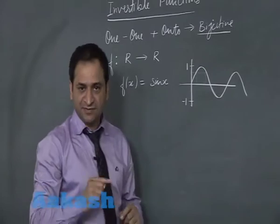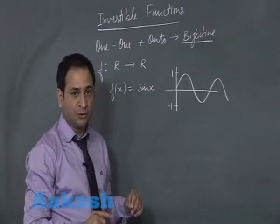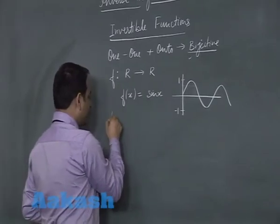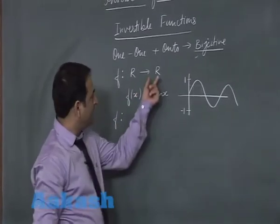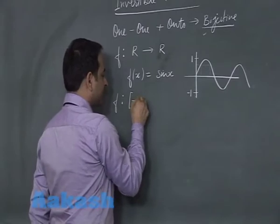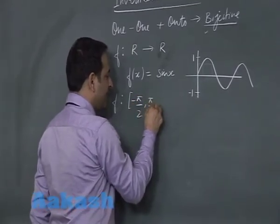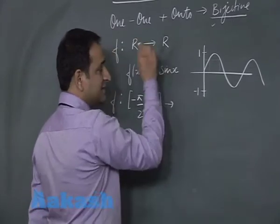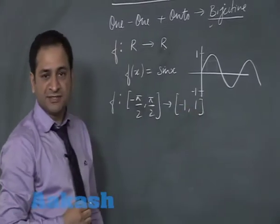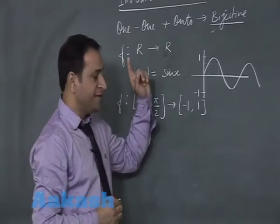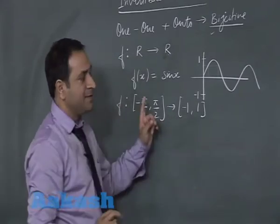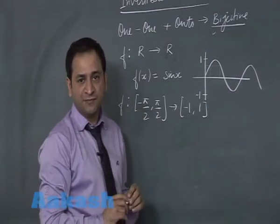I have to first make this function one-one and then make it onto — that is, I am going to make this function bijective. Then only it will be invertible. I will be changing the domain and the codomain. I will be setting the domain as minus π/2 to π/2 and setting the codomain from minus 1 to 1, because a function is onto if its codomain is equal to the range. So under this setting, this function is a bijective and therefore invertible function.